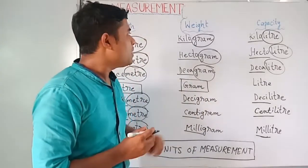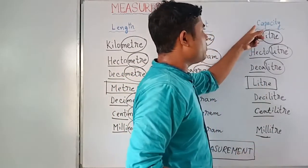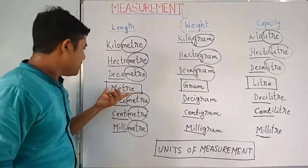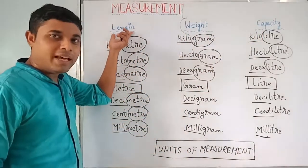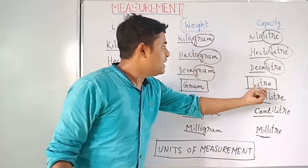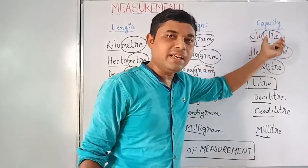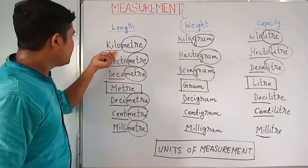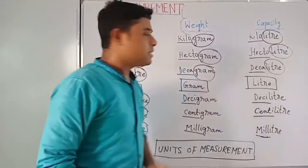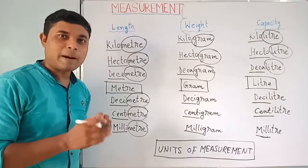Meter is the standard unit of length, gram is the standard unit of weight, and liter is the standard unit of capacity. You have to keep this in your brain. Also note: kilometer, kilogram, and kiloliter all share the same prefix 'kilo'.